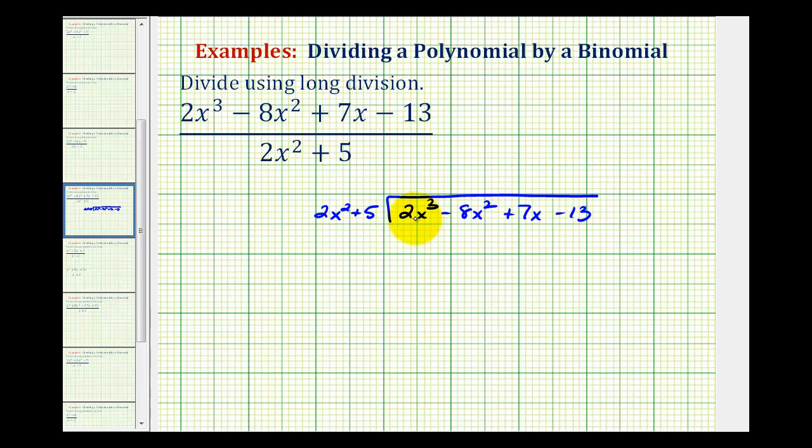Notice how in the dividend, the terms are in descending order, meaning from highest degree to lowest degree, and all the terms from degree three to degree zero are present.